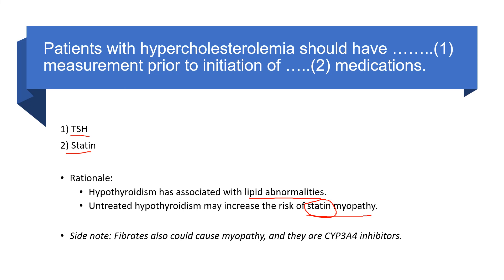As a last side note, fibrates — another type of anti-lipid drug — can also cause myopathy. You may see Step 1 questions about fibrates in this topic. Fibrates are also CYP3A4 inhibitors, so combining fibrates with statins will further increase statin levels in the blood, raising the risk of myopathy. I highly suggest creating a flashcard related to the table on the main differentiating points between glucocorticoid myopathy and hypothyroid myopathy. If you liked the video, please subscribe, and I wish you a great Step 2 and Step 1 exam. Thank you.